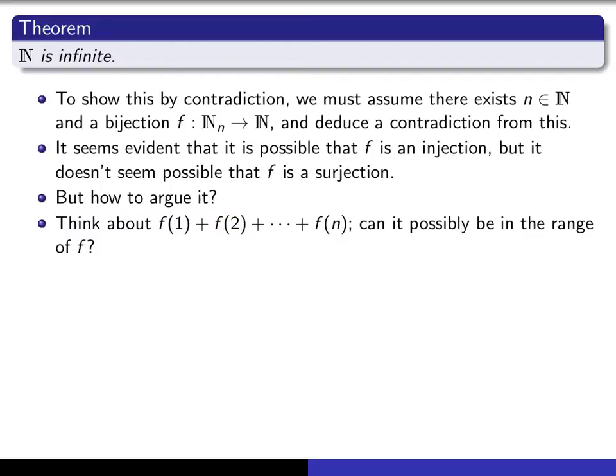But the individual numbers on this list are the only things that are in the range of f. And so the question is, is it possible for this sum to be in the range of f? That would certainly be a natural number, but possibly not in the range of f. So that's the idea of the proof.